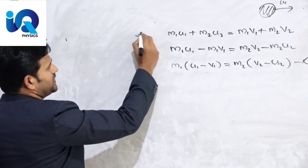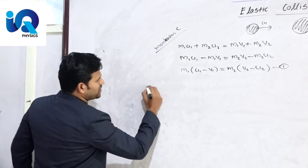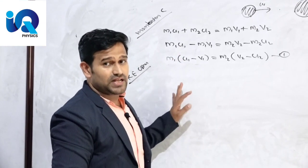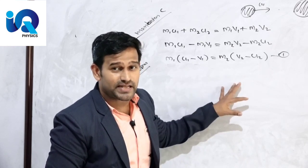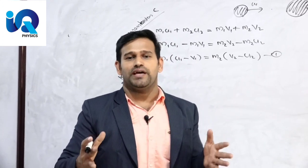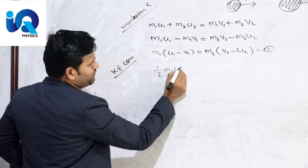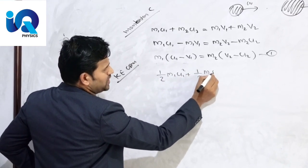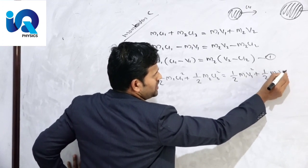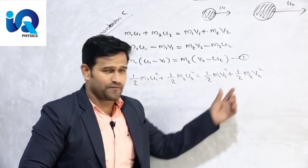Now let's look at the kinetic energy conservation. The sum of the initial kinetic energy before collision equals the final kinetic energy after collision: half M1U1 squared plus half M2U2 squared equal to half M1V1 squared plus half M2V2 squared.